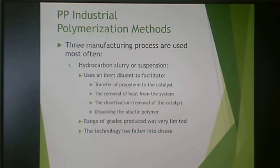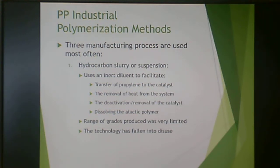There are three manufacturing processes. The first is hydrocarbon slurry or suspension: you use an inert diluent, it transfers propylene to the catalyst, it removes heat from the system, and then you can deactivate and remove the catalyst — and it dissolves the atactic fraction.